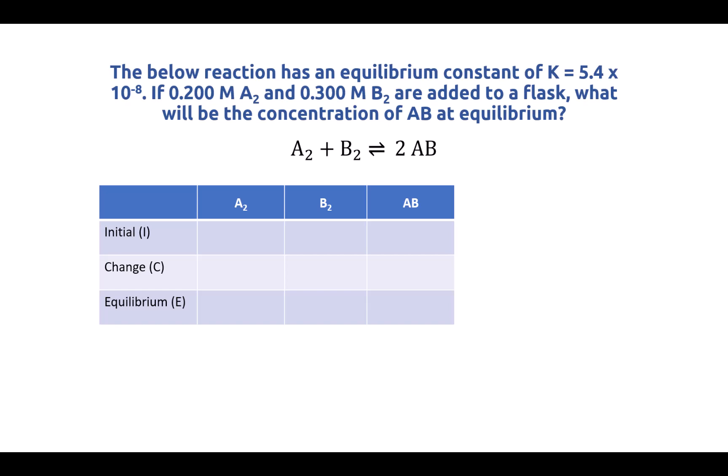So that is what is happening in this question because they want us to get the concentration of AB at equilibrium. So here is our ICE table. We have all three components represented in the ICE table, and I'm going to fill in the initial concentrations of all three of them. We were told that we have 0.2 molar of A2, 0.3 molar of B2, and we were not told anything about the amount of AB. That means we can assume that it is zero in the initial conditions.